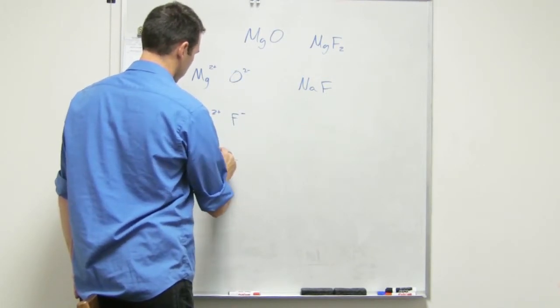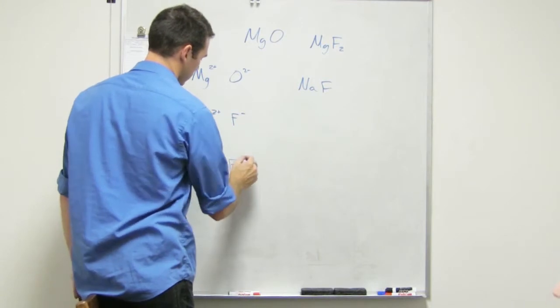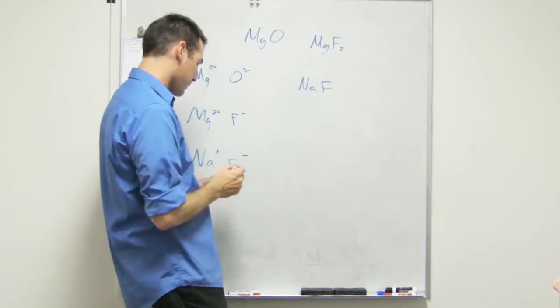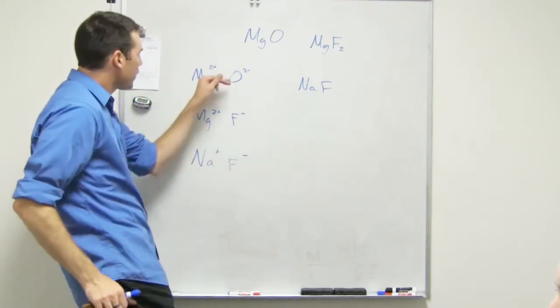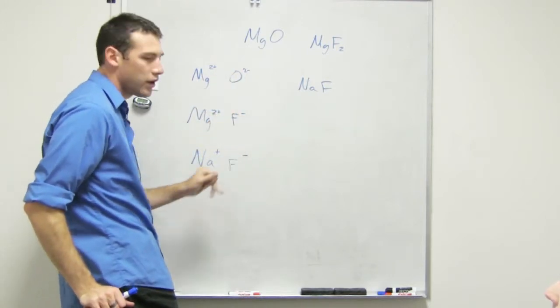Okay, now we got NaF. Na, that's a one plus, and then F is a one negative. Okay, there we go. So we see that we got a two and a two, a two and a one, and a one and a one.